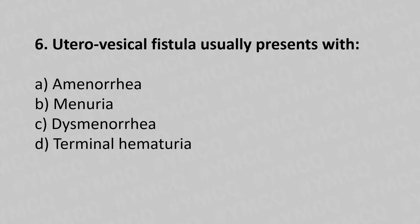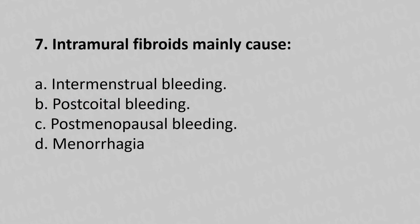Question 6: Urethrovesical fistula usually presents with — option A: amenuria, option B: menouria, option C: dysmenuria, option D: terminal hematuria. The answer is option B: menouria.